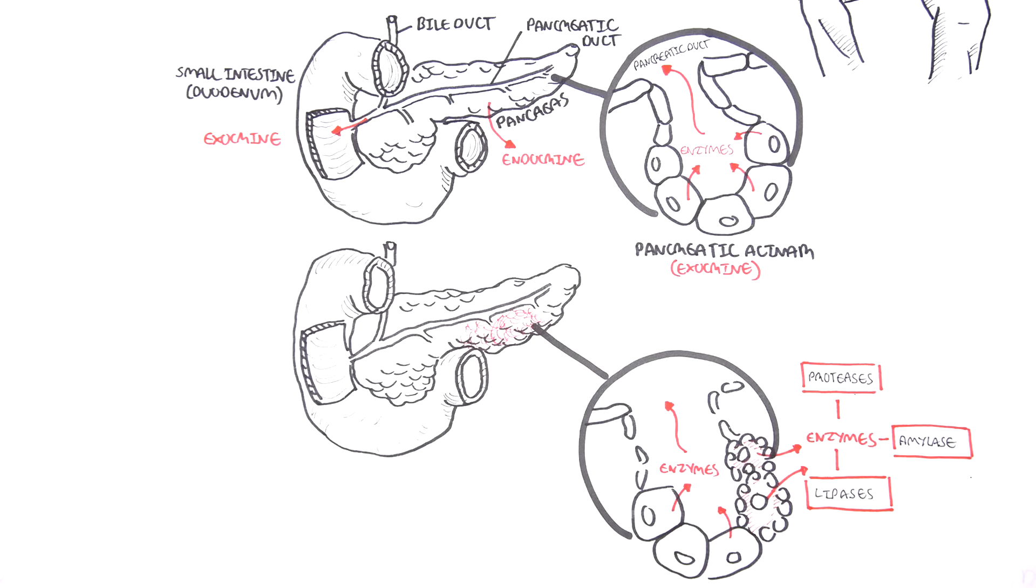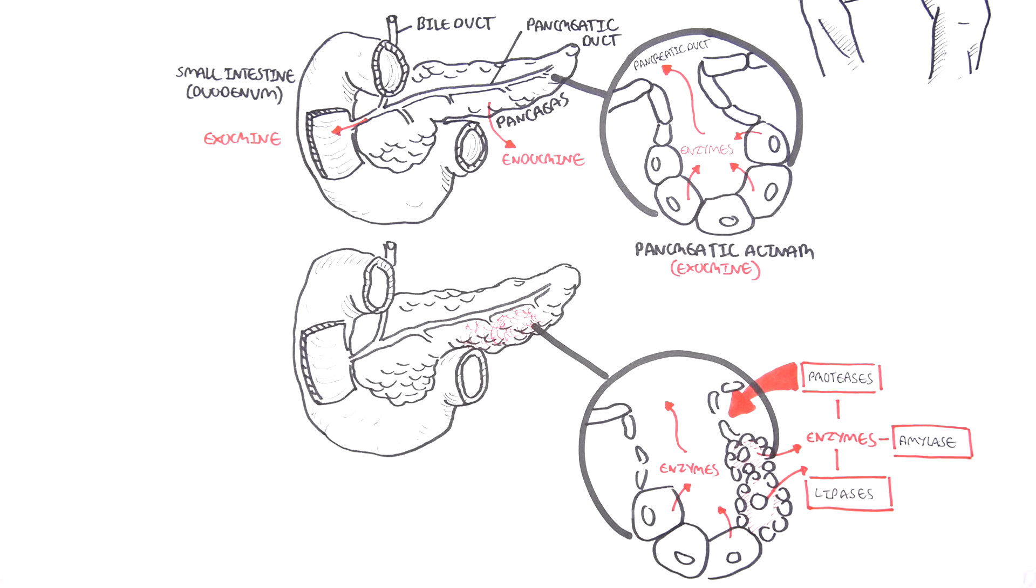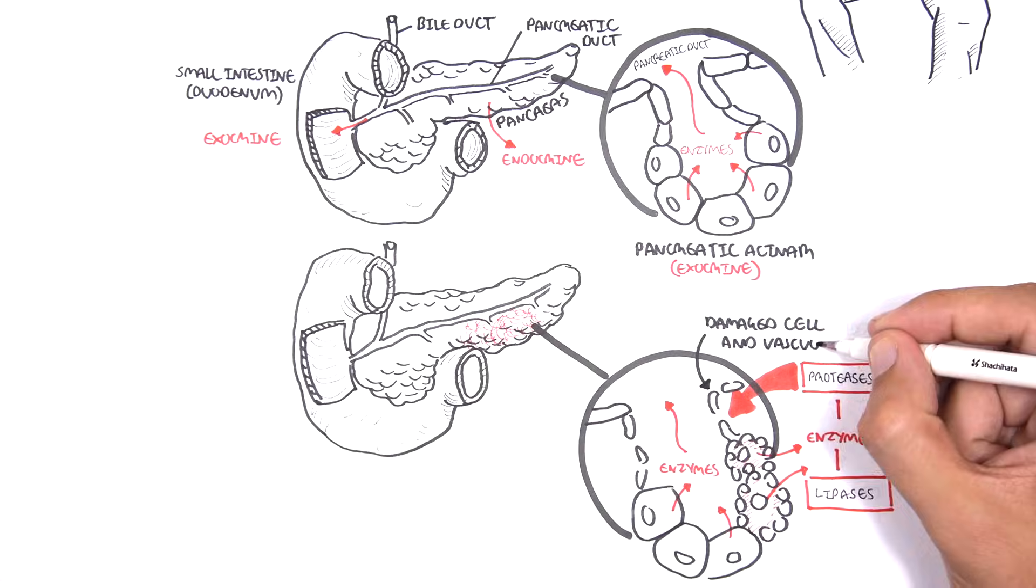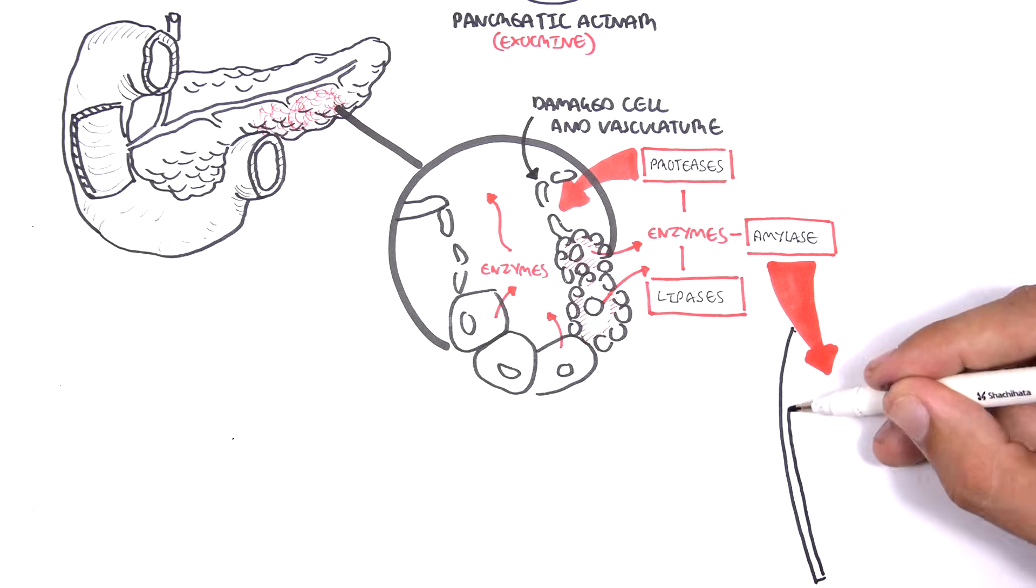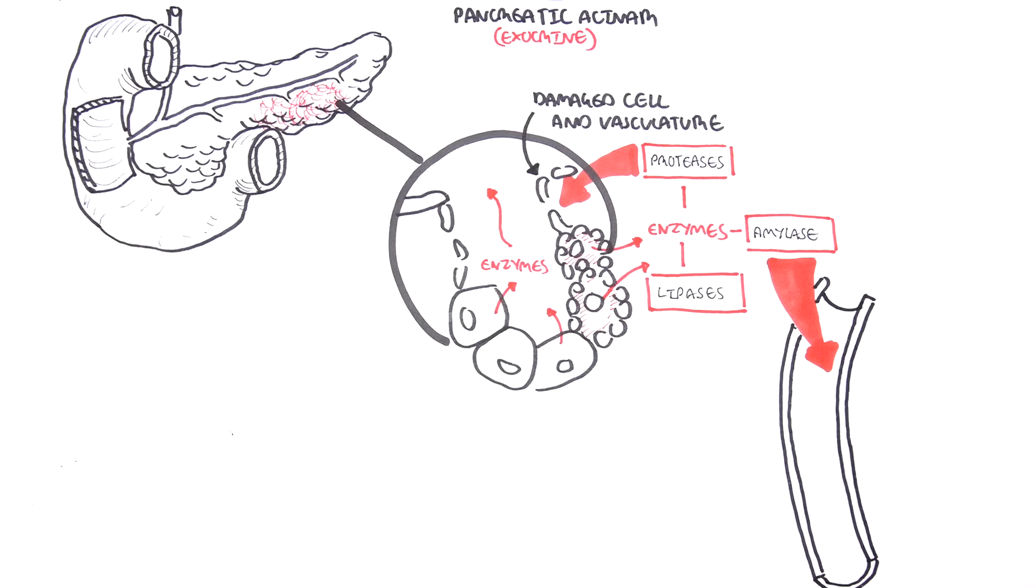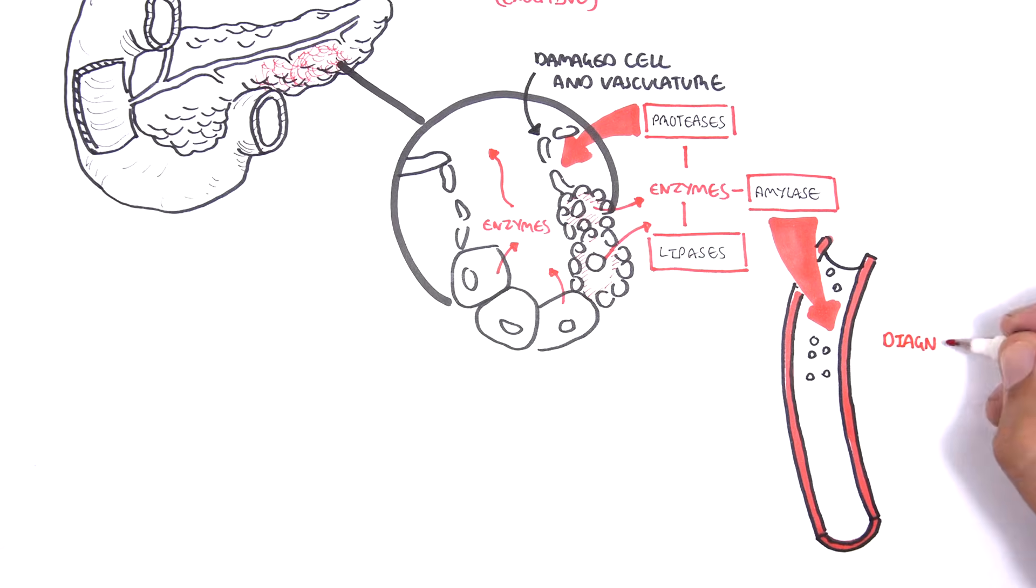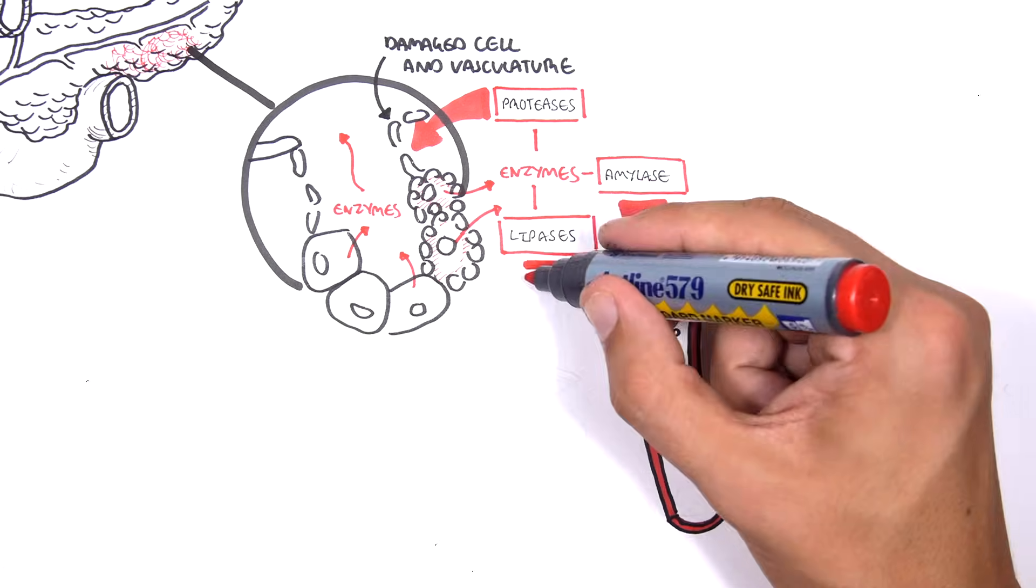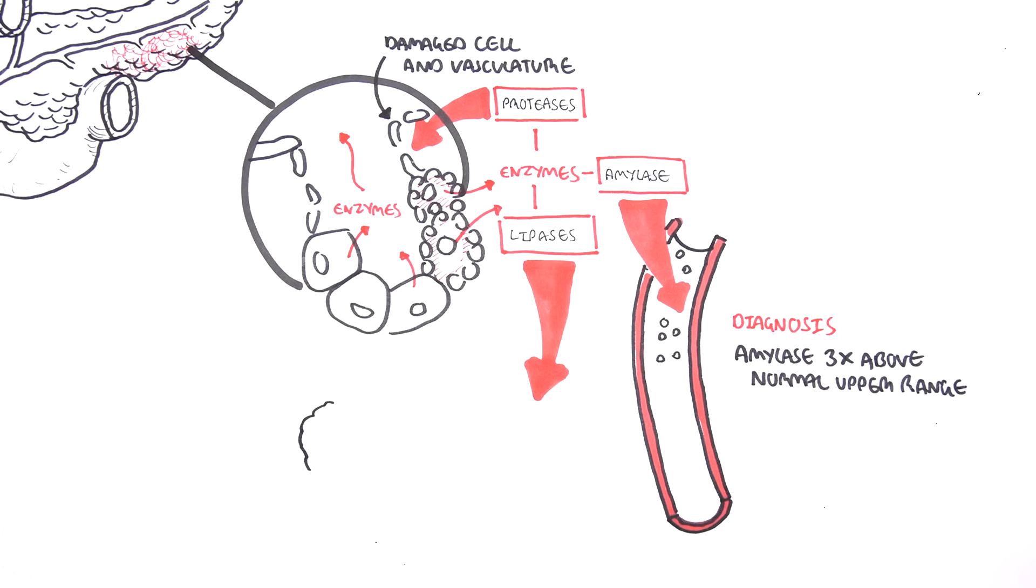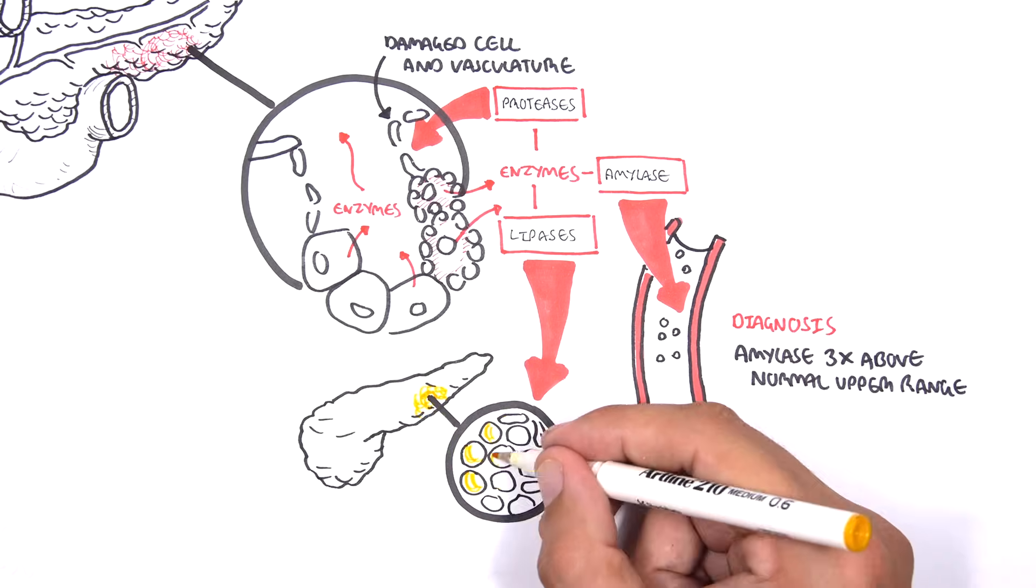Because the enzymes are released not into the duct but to the surrounding pancreatic tissue, the proteases cause damage to cell and vasculature through protein-mediated damage. The amylase levels increase in the blood, which is useful for diagnosing pancreatitis, but it is not specific. The lipases also increase in the blood and can result in a serious complication of fatty necrosis of the pancreas.